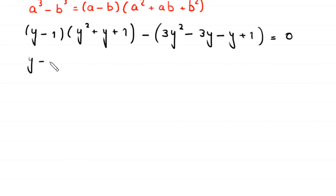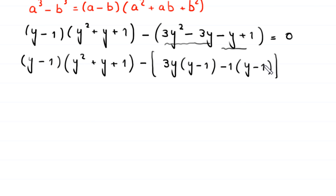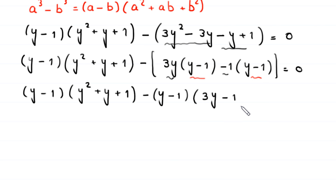So the expression becomes (y − 1)(y² + y + 1) minus [3y(y − 1) − 1(y − 1)] = 0. Factoring (y − 1) from the terms 3y² − 3y gives 3y(y − 1), and from −y + 1 gives −1(y − 1), leaving (y − 1)(3y − 1) = 0.